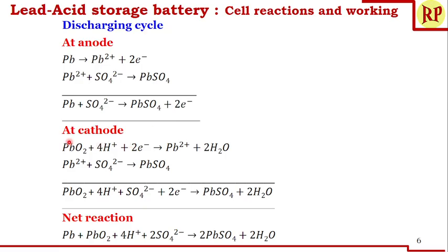At the cathode, lead-dioxide plus 4H⁺ — coming from the sulfuric acid — gains 2 electrons (because reduction occurs at cathode) to form Pb²⁺ plus water. Then Pb²⁺ reacts with sulfate ions from the sulfuric acid to form PbSO₄. Note that this second reaction is the same for both anode and cathode. The overall cathodic reaction is: PbO₂ + 4H⁺ + SO₄²⁻ + 2e⁻ → PbSO₄ + 2H₂O.